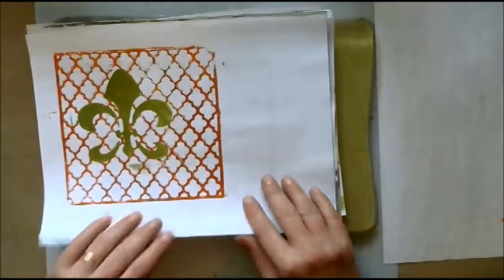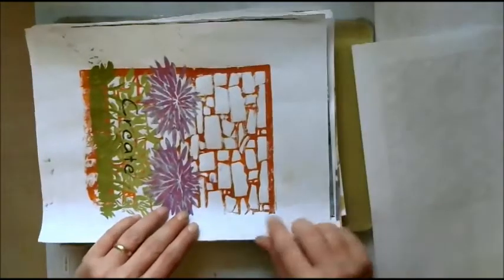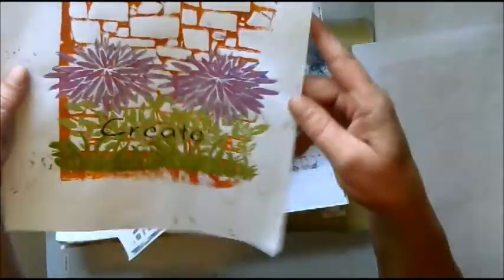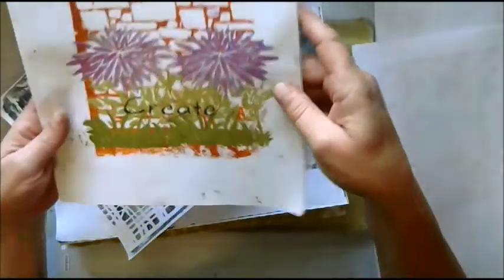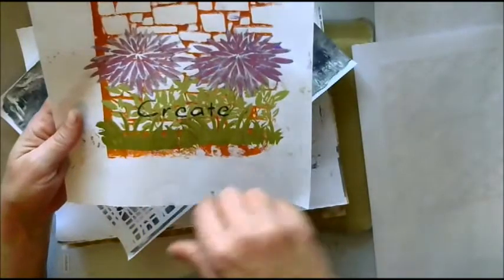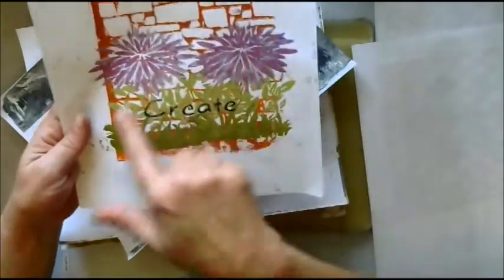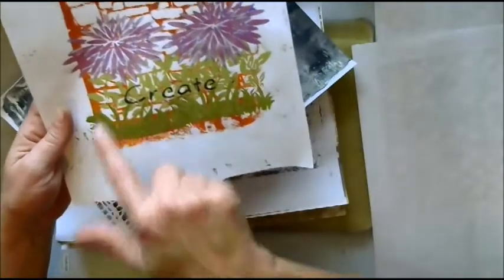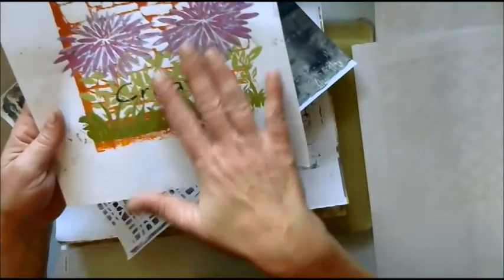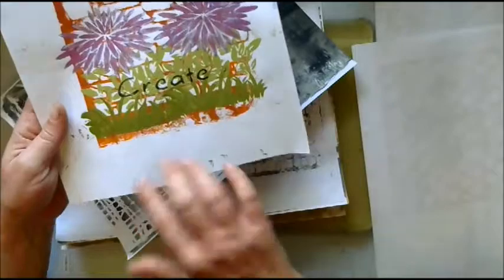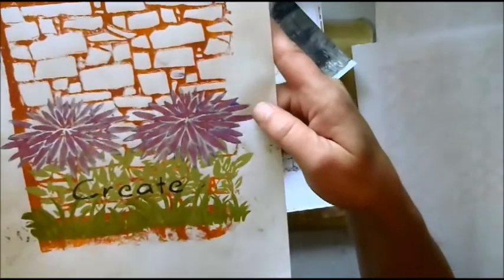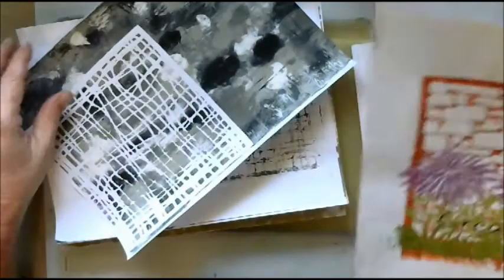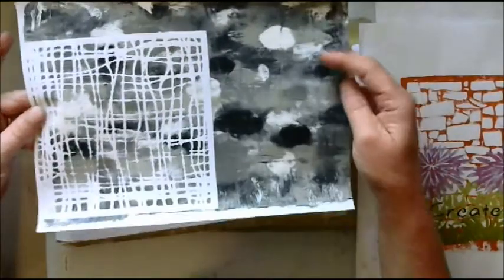And then I love this one. This was a brick pattern stencil and then I stenciled over it the flowers and the leaves, and then moved the stencil so I could create a shadow. I just think that is beautiful and that is going in my journal.